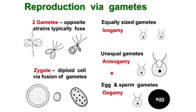In anisogamy, this type of sexual reproduction, both gametes are dissimilar morphologically — male gametes are smaller in size and female gametes are larger. Oogamy is a type of reproduction in which the male gamete is smaller and motile, but the female gamete is larger but not motile. The male gamete comes closer to the female gamete and they fuse.